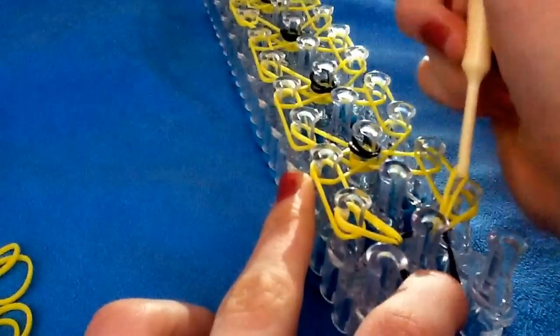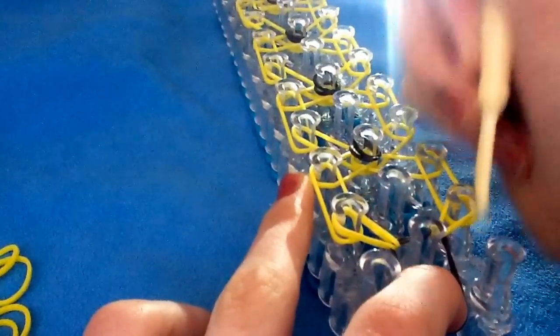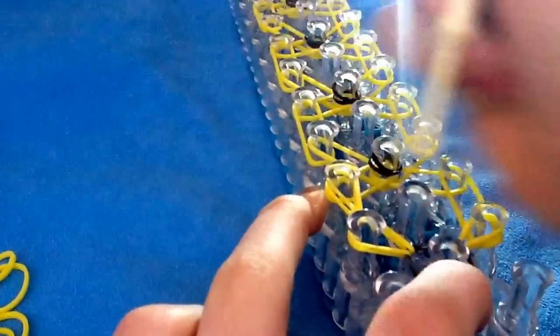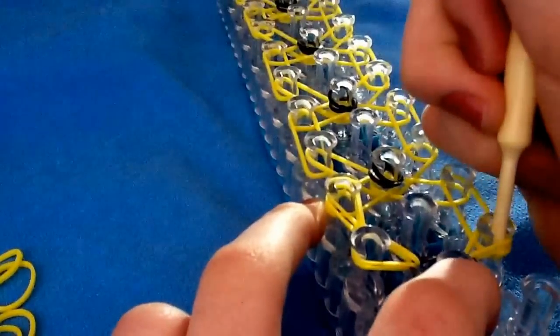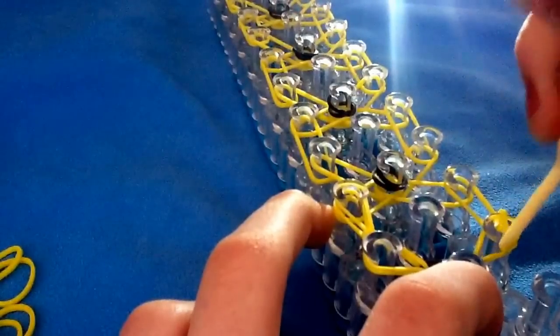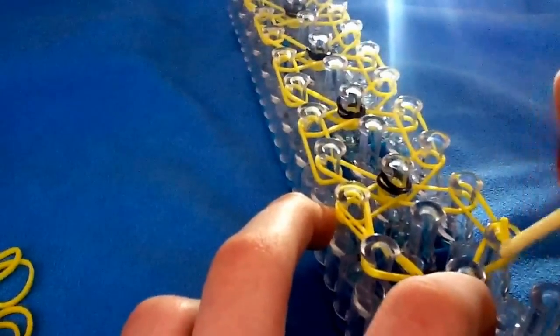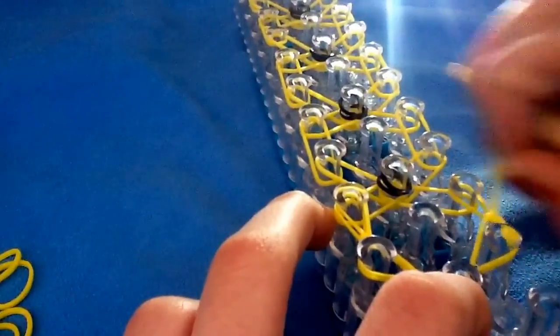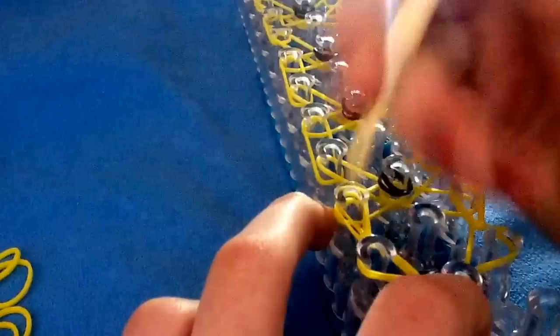Then you're going to grab the other one. So grab the bottom rubber band on the left side and loop it back onto itself. And grab the bottom rubber band on the right side and loop it back onto itself.